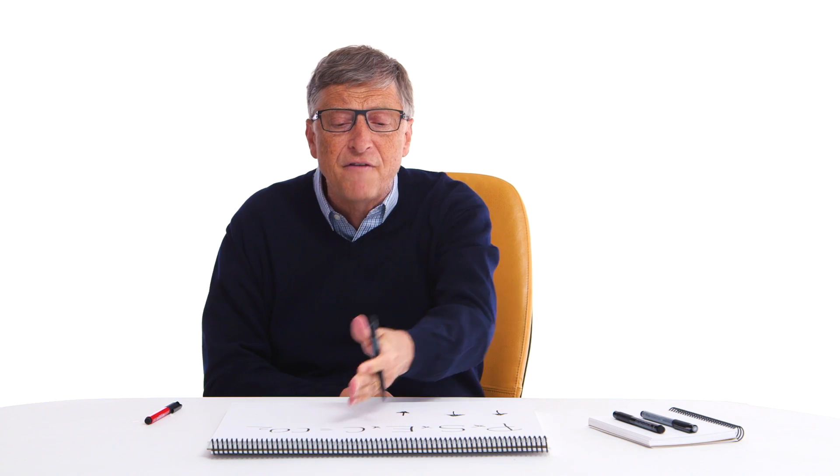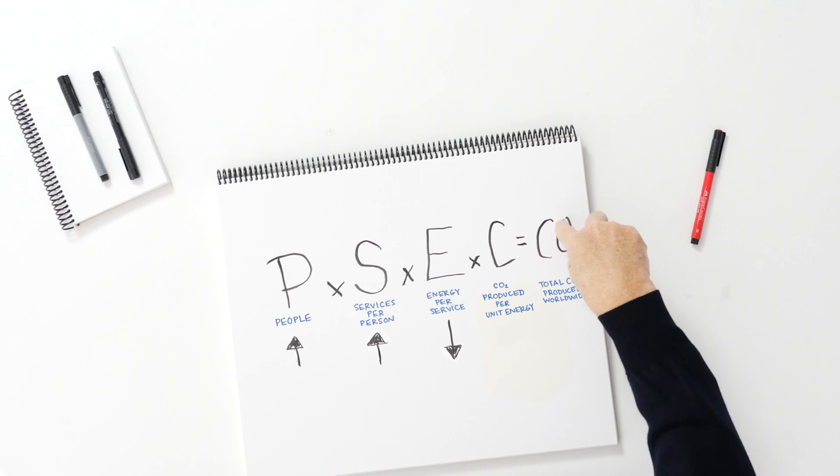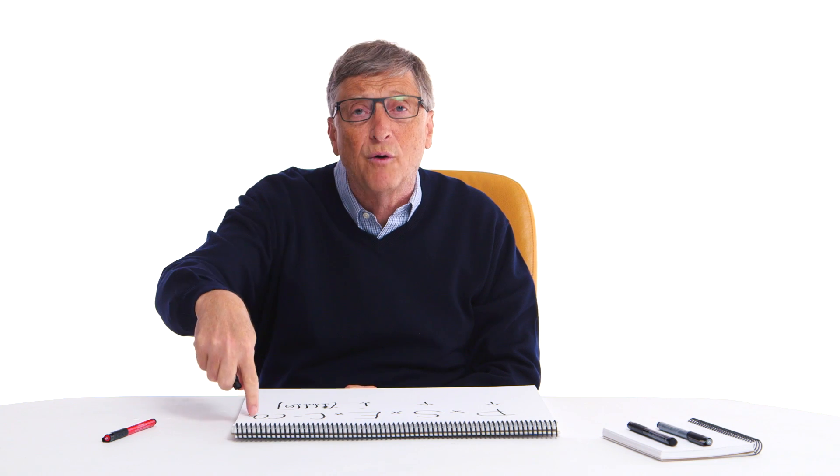And so that leaves our final factor, CO2 per unit of energy. That's where we're going to have to do something super dramatic. We're going to have to use sources of energy that emit no carbon dioxide to get from 36 billion down to a very, very small number and avoid catastrophic climate change.